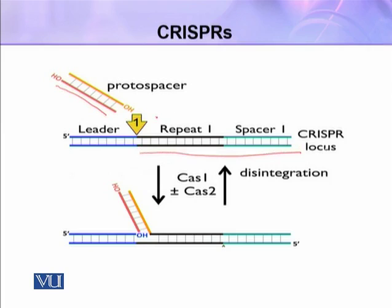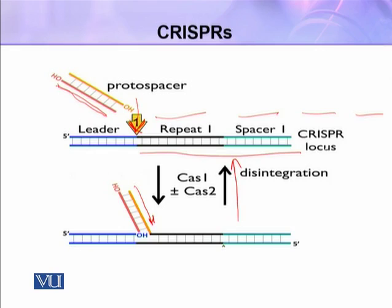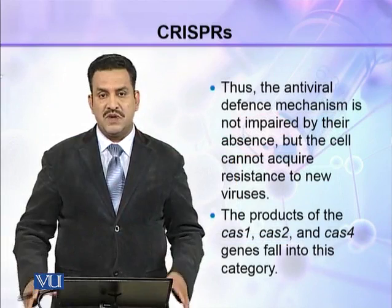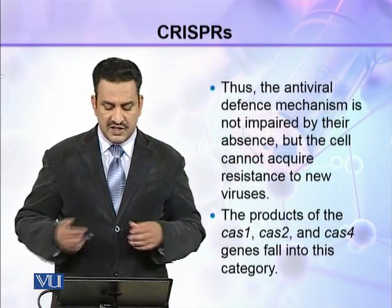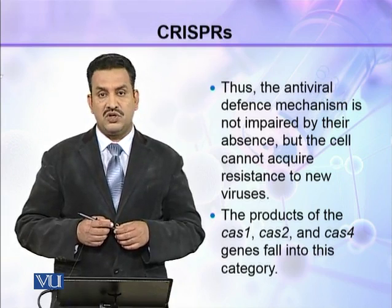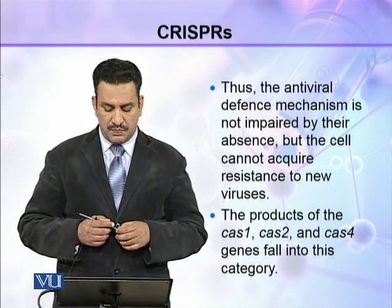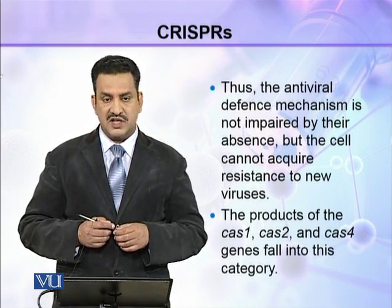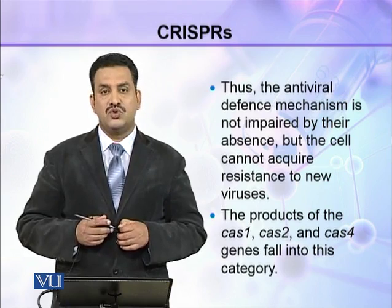The pattern is repeat, spacer, repeat, spacer, and the protospacer will always be added at the proximal side of the CRISPR near the leader sequence. If a spacer sequence is removed, the CRISPR reverts to its prior state. The antiviral defense mechanism is not impaired by their absence, but the cell cannot acquire resistance to new viruses.